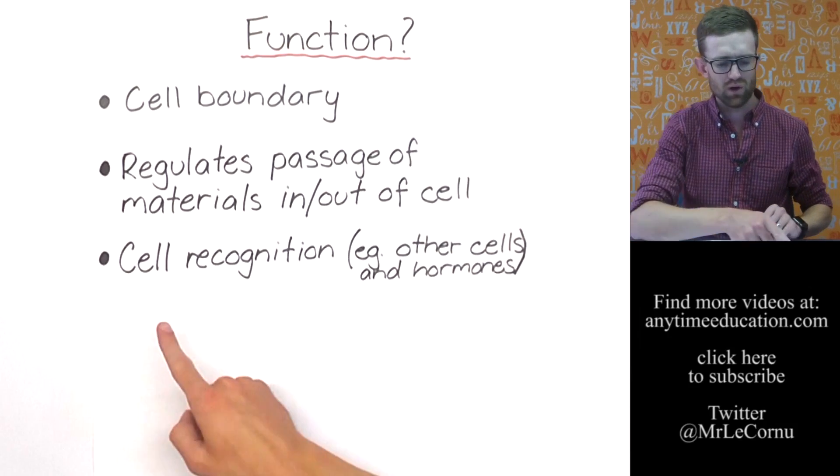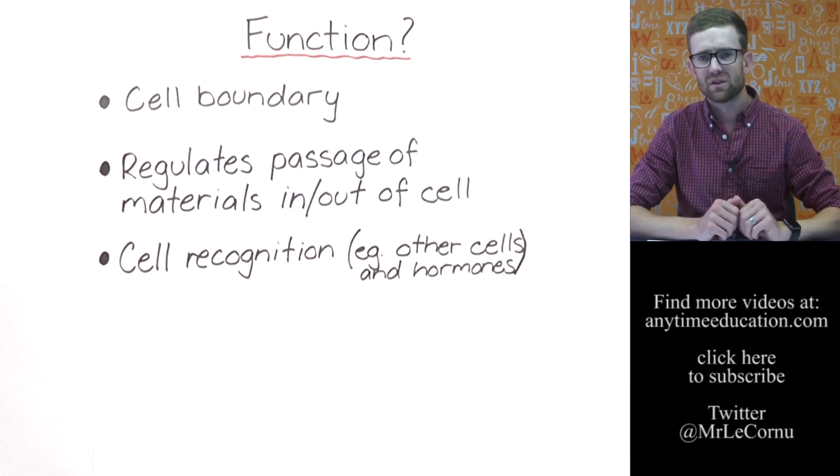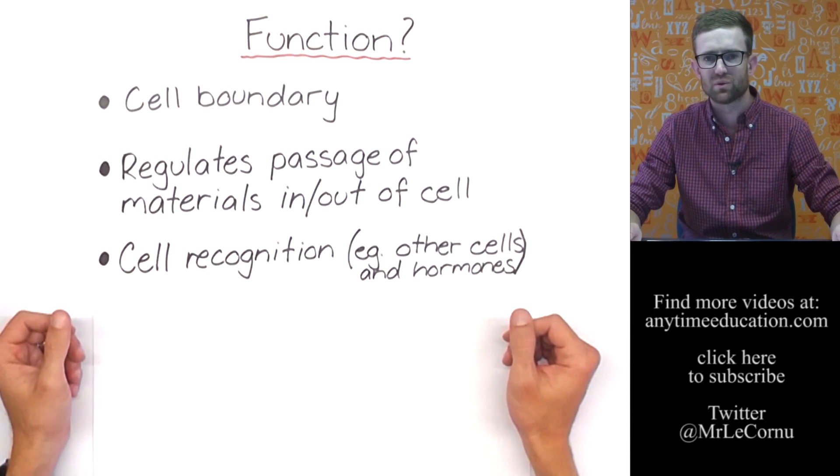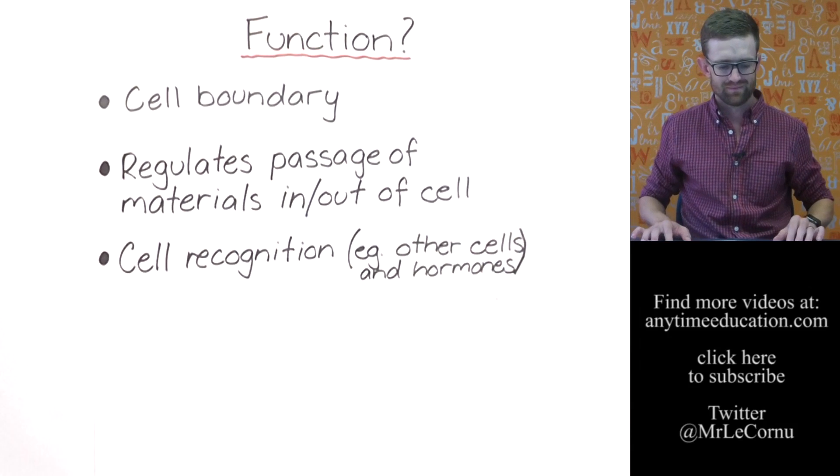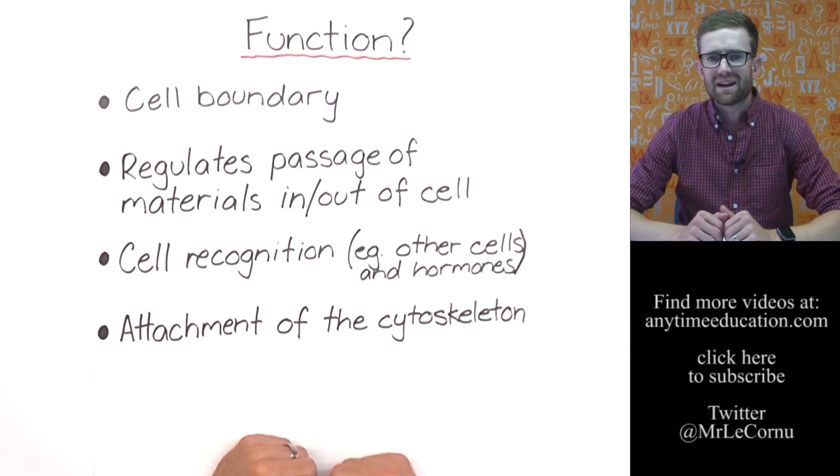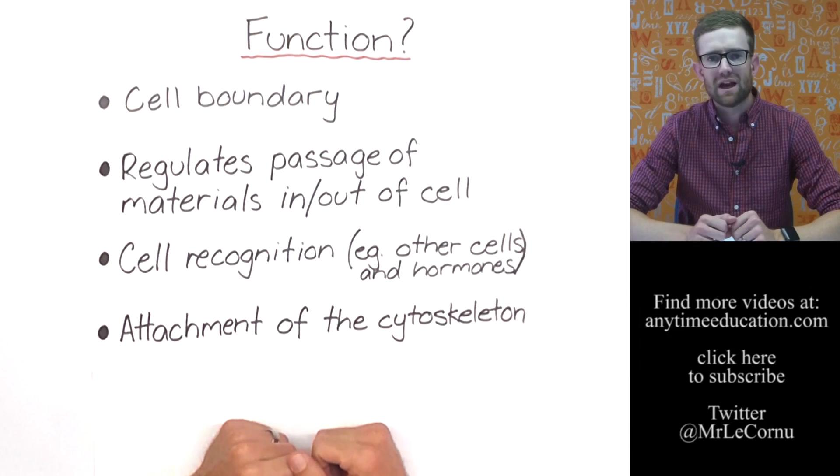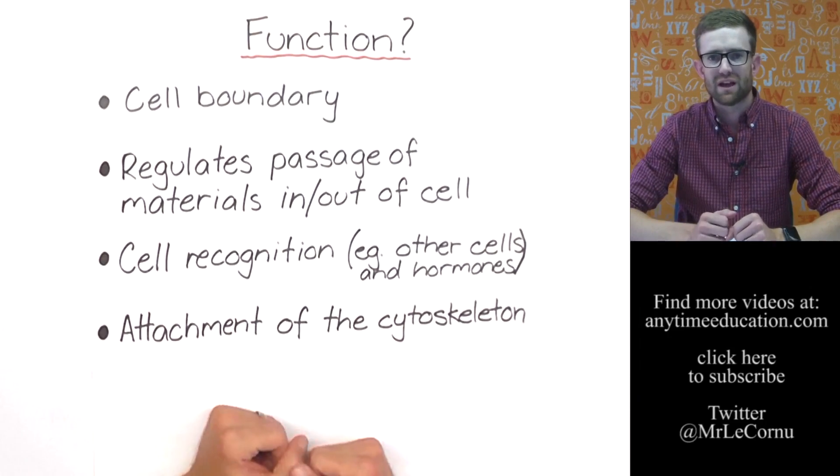The other thing the cell membrane is responsible for and where those proteins play a role is in recognition. Other cells and hormones are examples of things those receptors would be there to detect. Lastly, the cell membrane is attached to the cytoskeleton, only in eukaryotic cells because only eukaryotic cells have a cytoskeleton.